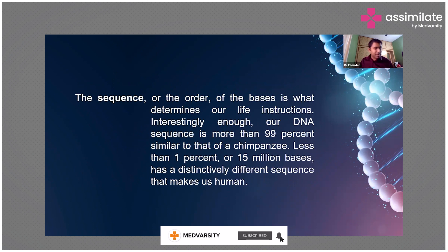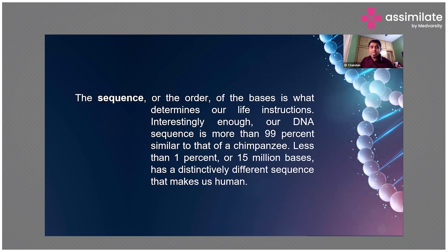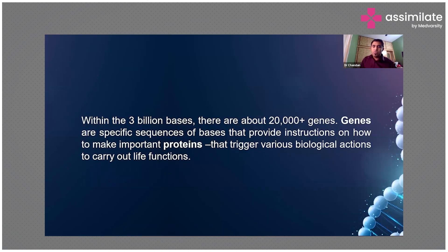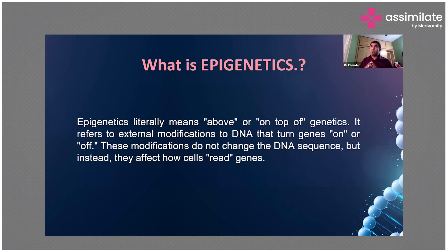Our DNA sequence is more than 99 percent similar to chimpanzees — less than one percent difference. To be more precise, it's just 15 million bases that are the only difference between us and chimpanzees. With these 3 billion bases, there are about 20,000 plus genes — specific sequences of bases that provide instructions to make important proteins that trigger various biological functions.